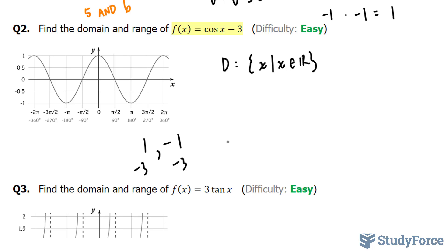and we end up with -2 and -4. Therefore, our range will be y such that y must be between -2 and -4 for all real y values.